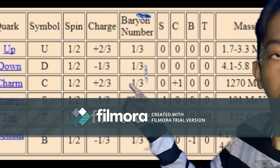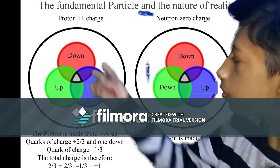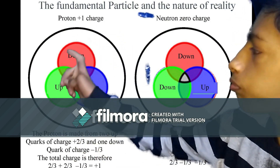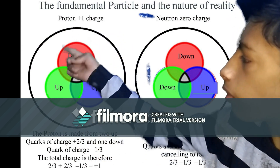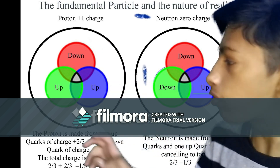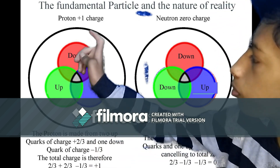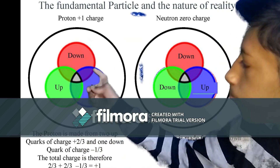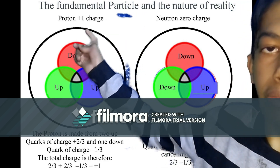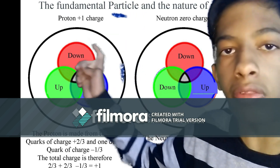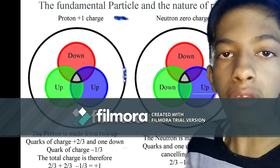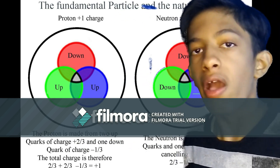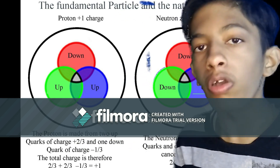So first, for proton quarks — this is the proton, and here on the inside there are three quarks: up, up, and down. So the charge is plus two-thirds, plus two-thirds, minus one-third. This is the charge of the quarks, and that's why the proton has a positive charge.